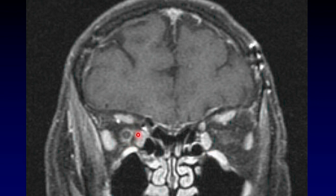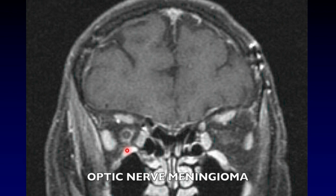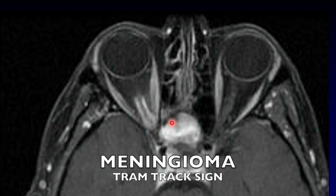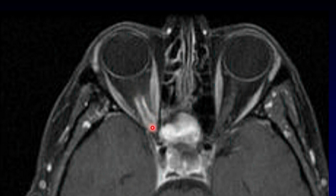Contrast that with this image. Here there is a preserved dark nerve centrally, and the enhancement is all around peripherally, somewhat poorly defined. This is characteristic of an optic nerve sheath meningioma — it's arising around the nerve, not in the nerve. Sometimes it can compress the nerve quite a bit. In the axial image, we can again see the preserved nerve down the center and the enhancing tumor on either side — these are the tram tracks.